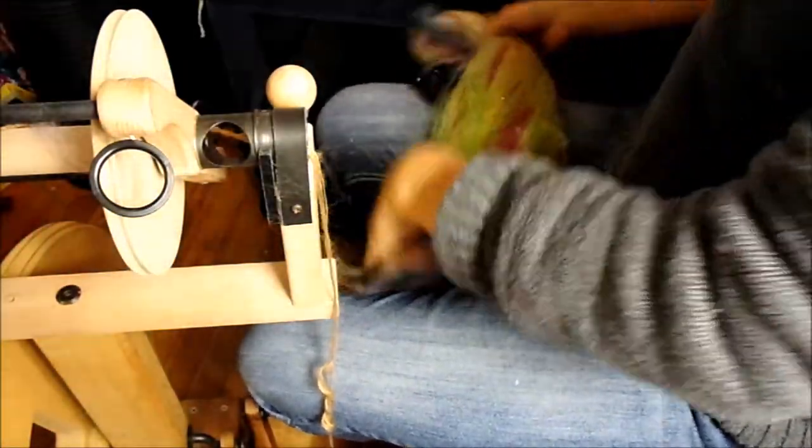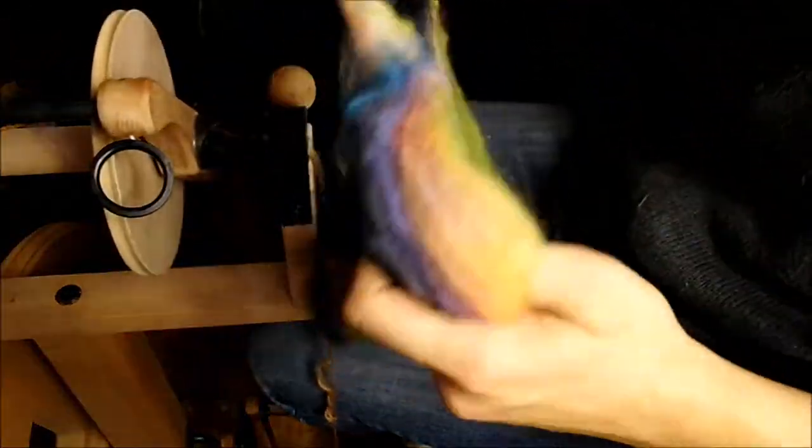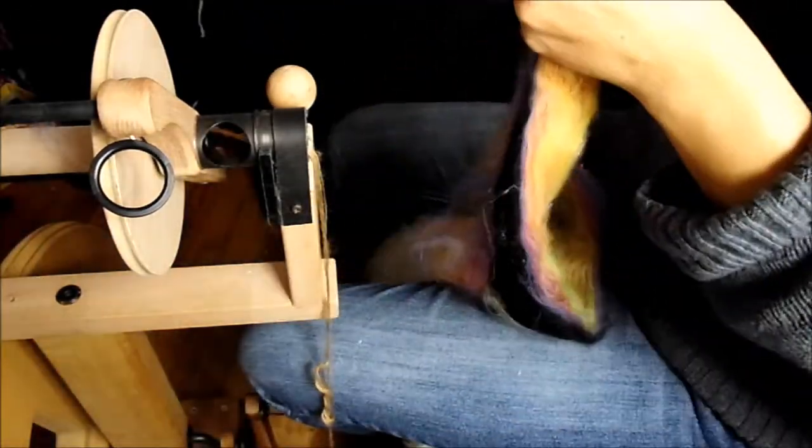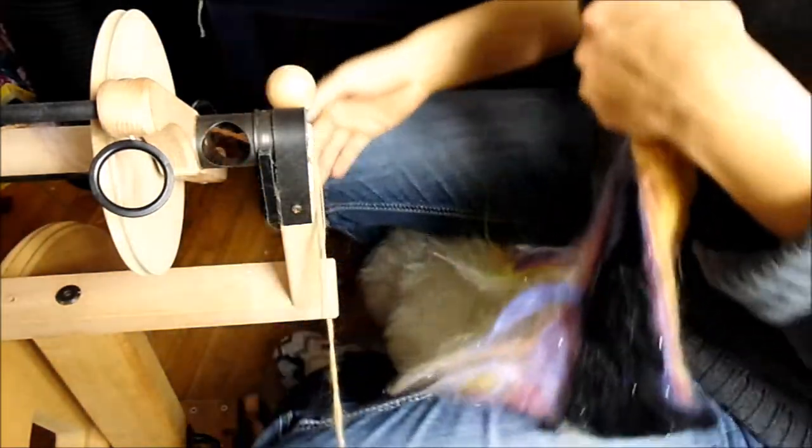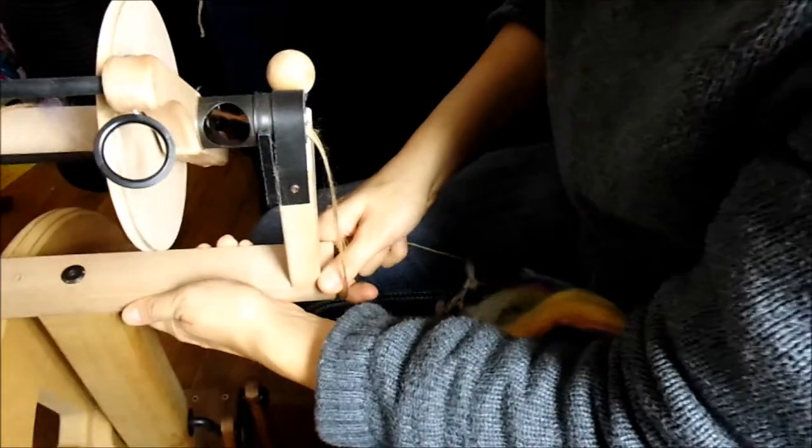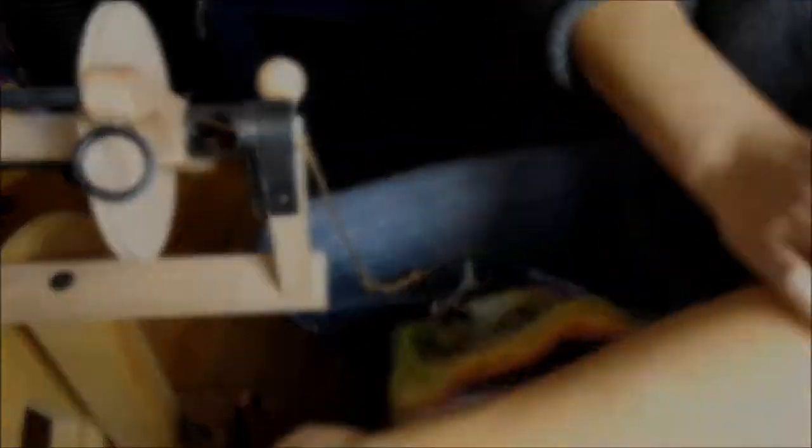So we just take it and pull it into strips. It's okay if the strips get messy, that's all right. So we have our spinning wheel all set up, we're still using the Ashford Kiwi Superflyer.